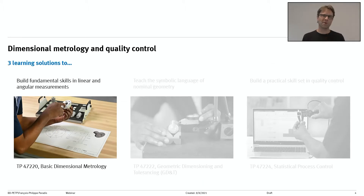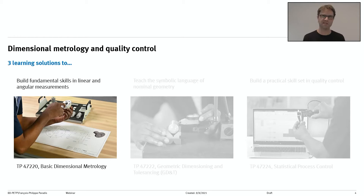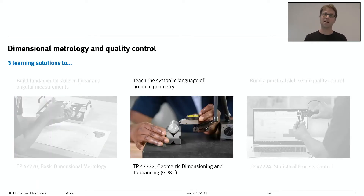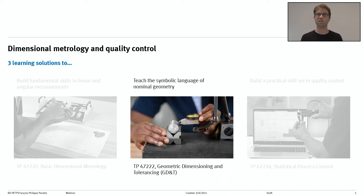So what about our three learning solutions? We start with building fundamental skills in linear and angular measurements — think about simple measuring tools such as a tape measure, micrometer, or a screw pitch gauge. This training package is called Basic Dimensional Metrology. The second one is called Geometric Dimensioning and Tolerancing, also called GPS for Geometric Product Specifications outside of North America.